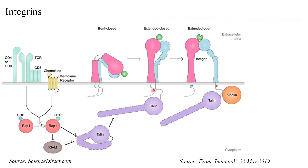When talin comes and binds, the integrin becomes extended but it is still closed. When another molecule from inside — kindlin — comes and binds, the closed extended integrin becomes an extended open integrin, with certain implications for the functionality of the T cells.